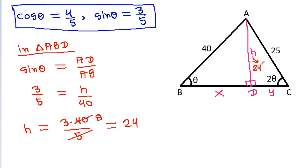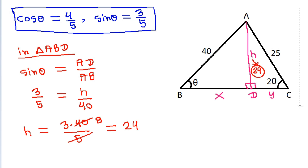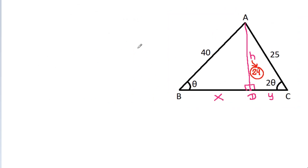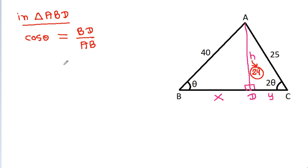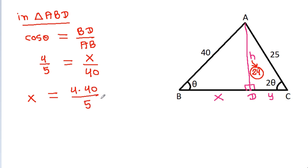So H equals 24. In triangle ABD, cos theta equals BD divided by AB, so X equals 4 times 40 divided by 5, and since 5 times 8 is 40, X equals 32.